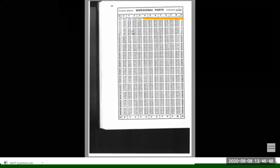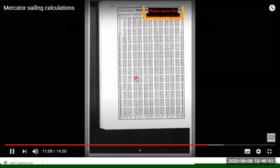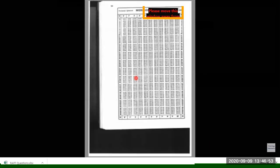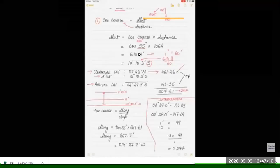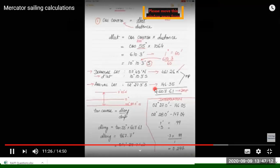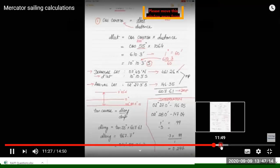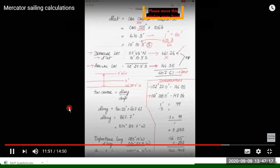From meridional parts in the Norie's table we will get the meridional parts. Now to calculate the d long, we have the formula tan course equals d long upon dmp.